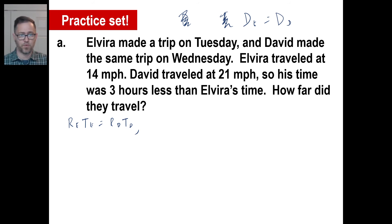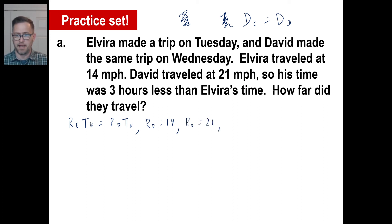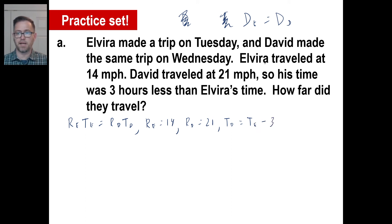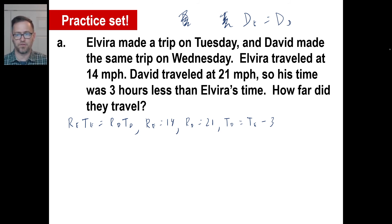Elvira traveled at 14 miles an hour, so the rate of Elvira is 14. David's was 21, so the rate of David is 21. Now we just need a time. David's time was three hours less than Elvira's — so the time of David equals the time of Elvira minus three. We don't know what these all are yet. Just set yourself up with four beautiful equations.